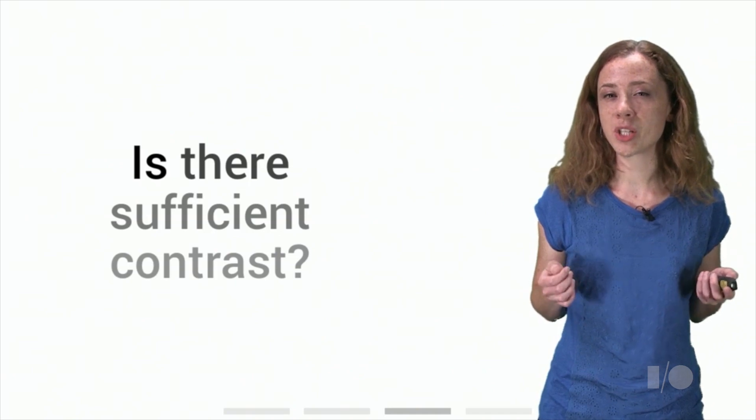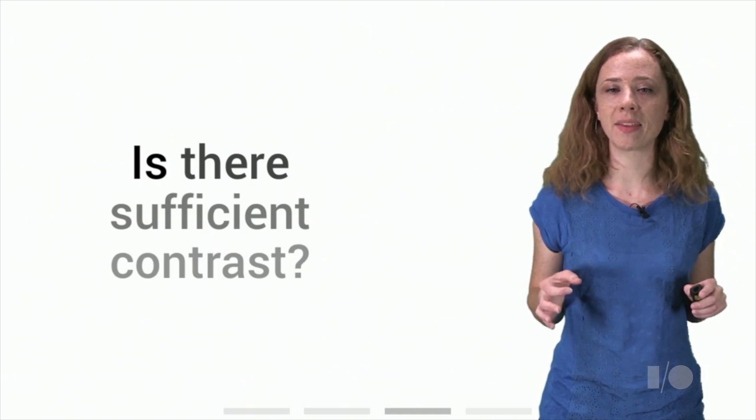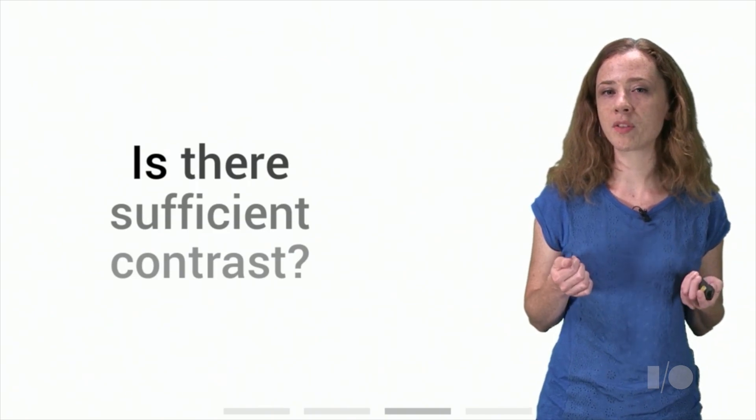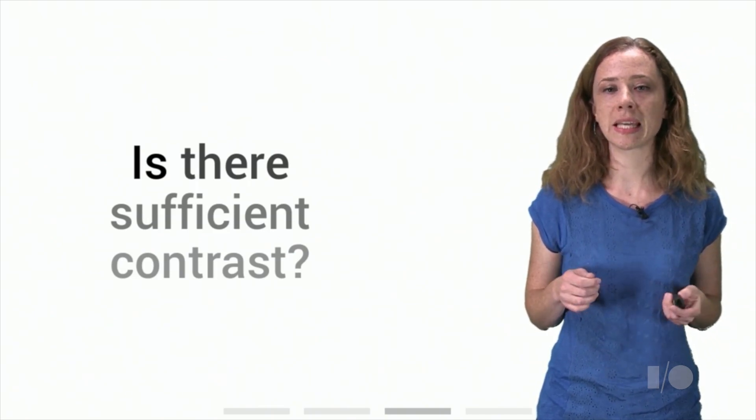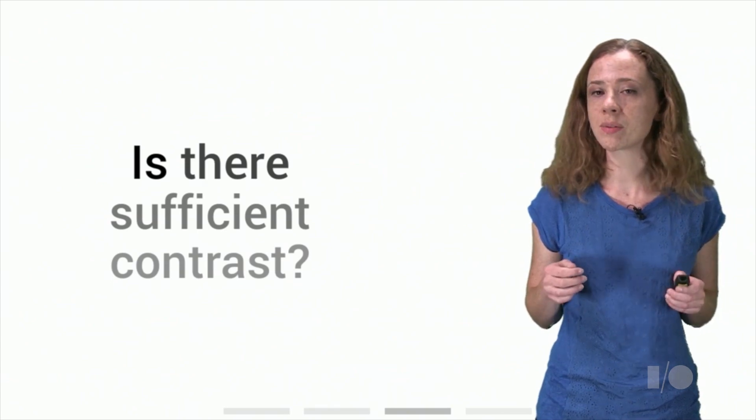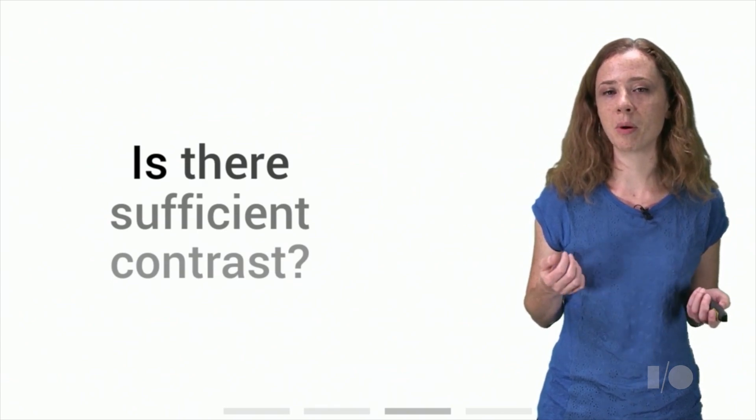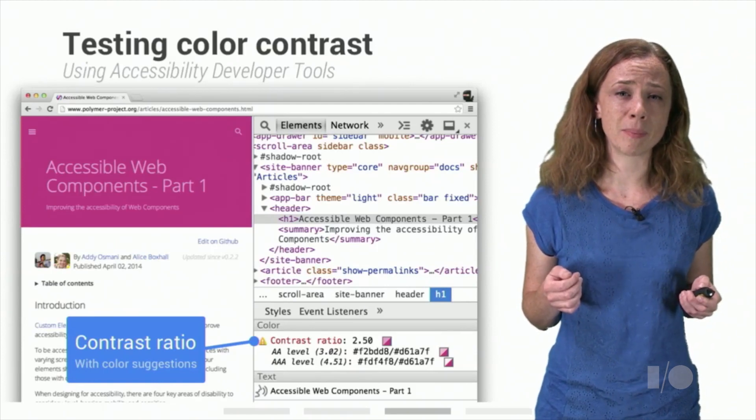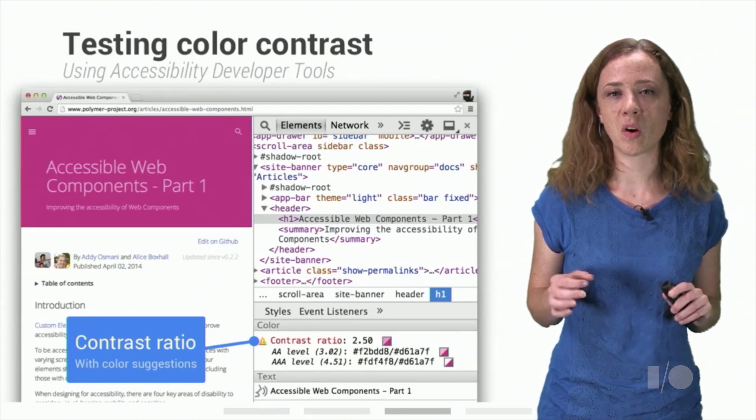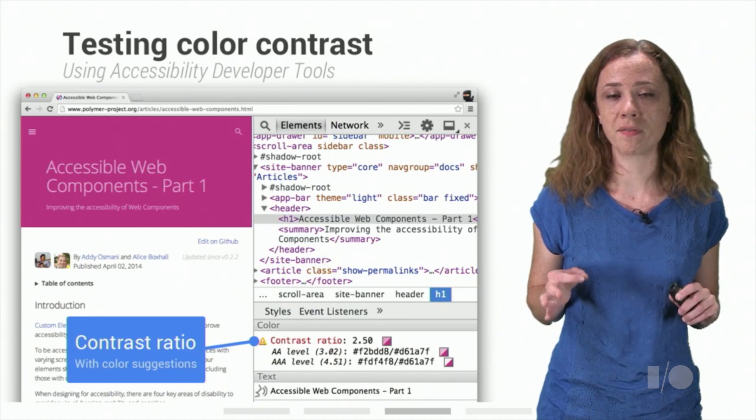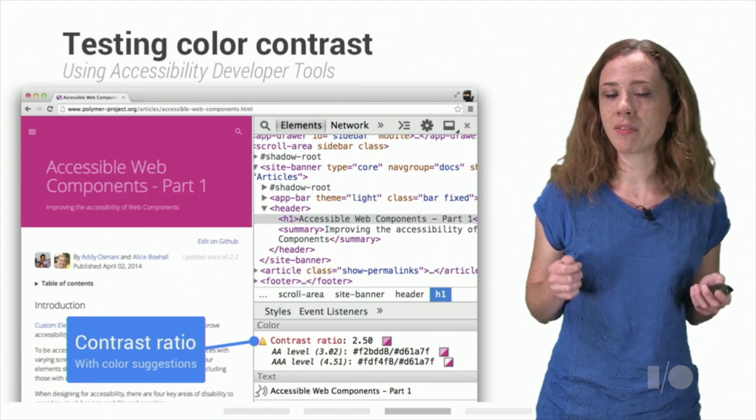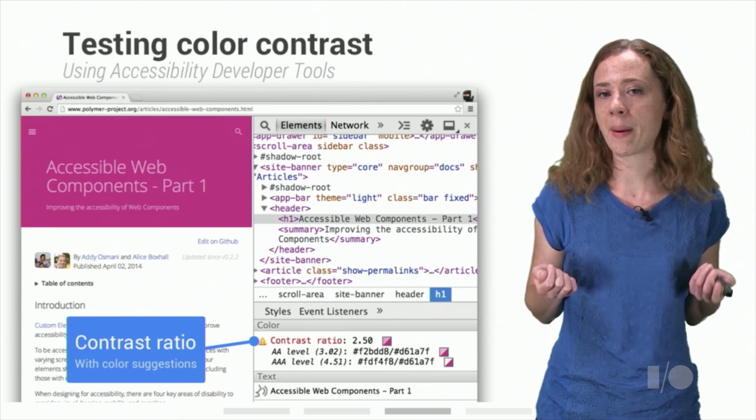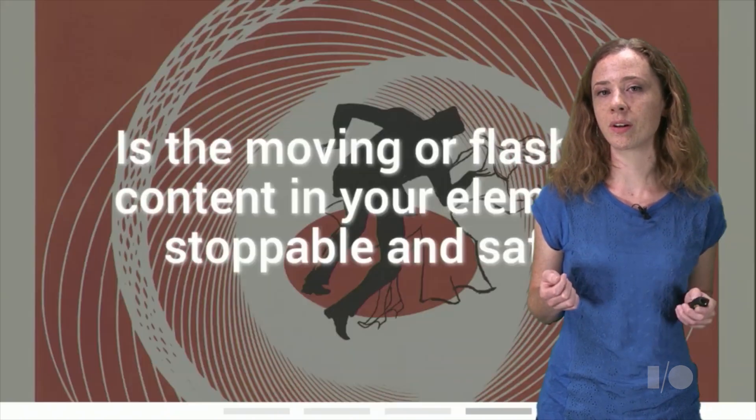We also need to make sure that there's always sufficient contrast between text or icons and background color. This is important for users with low vision who might have trouble reading low contrast text, colorblind users in the case where we're using two different colors next to each other, and any user using a mobile phone or device in bright sunlight. Any text content displayed in your element should at least meet the minimum contrast ratio of 4.5 to 1. You can audit your element for sufficient contrast using the Accessibility Developer Tools extension, which even provides suggested foreground and background color pairs if it finds low contrast text.